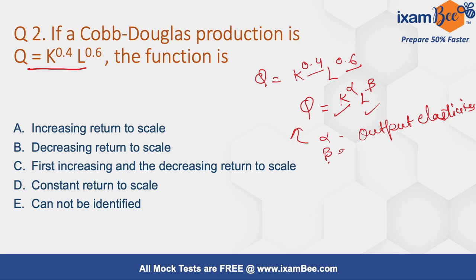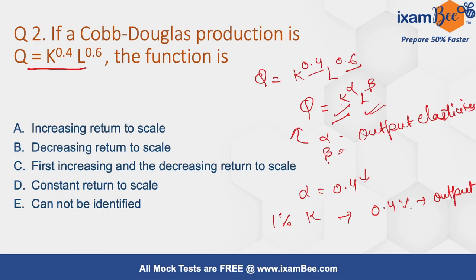Output elasticity measures the responsiveness of output to a change in the level of either capital or labor. For example, if alpha equals 0.4, a 1% change in capital leads to a 0.4% change in output. If capital increases by 1%, output increases by 0.4%; if capital decreases by 1%, output decreases by 0.4%.